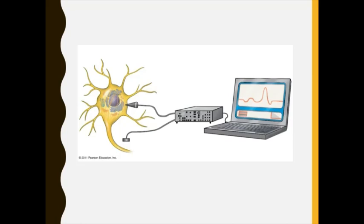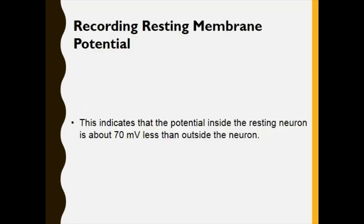The electrode setup is connected to a computer or laptop to monitor voltage. There are two wires — one with a pointed microelectrode part that penetrates the neuron, and the other which remains outside in the extracellular fluid. When both electrode tips are in fluid, the voltage difference between them is zero. However, when the tip is inserted into the neuron, a steady potential of negative 70 millivolts is recorded.